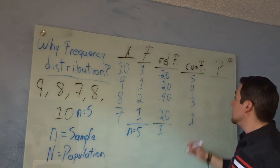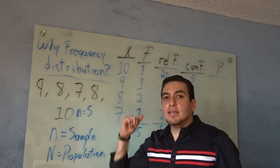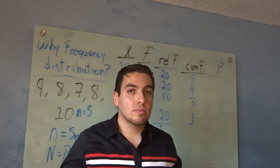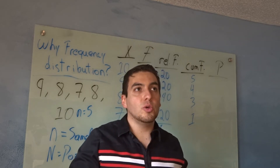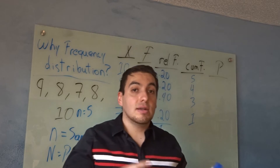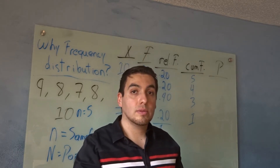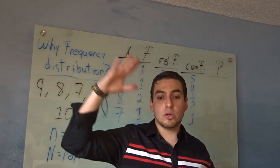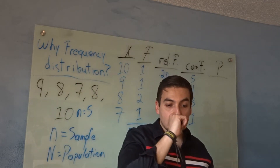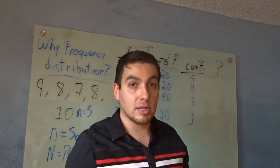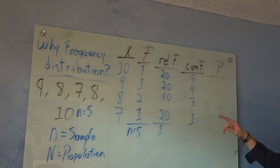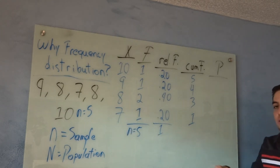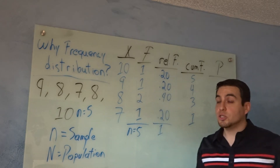The cumulative frequency is not that interesting on its own — the main thing is the percentile. Percentile comes with a P, and it's super important. The percentile shows you in a percentage how many times the number happened at that point or below it. To get the percentile, take the cumulative frequency, divide it by n, and multiply by 100 so it becomes a percentage.